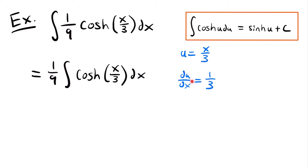If we solve for du by multiplying both sides by dx, we have du is equal to one third dx. However, I don't see a one third in our integral, but I do see dx. So I'll multiply both sides by 3 — that cancels the one third — and we have that 3 du is equal to dx. Now we have a term of du equal to something we can find in our integral.